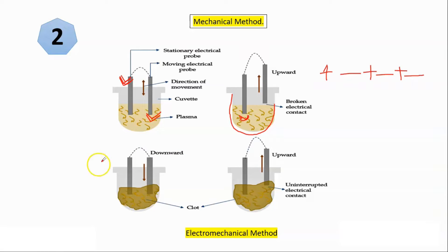So connection is like this: one time connection established, other time breaks, again establish, again break, again establish, again break. But as soon as clot is formed, will the firm clot allow the movement of this free electrode or probe? No, answer is no because clot engages it inside and does not allow the motion or oscillatory motion.